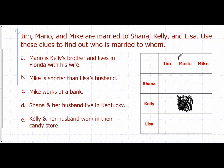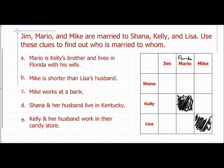Mario lives in Florida, so I'm going to put Florida above Mario — that information may help later. The next clue says Mike is shorter than Lisa's husband, which means Mike cannot be Lisa's husband. So Mike and Lisa are not going to be married.